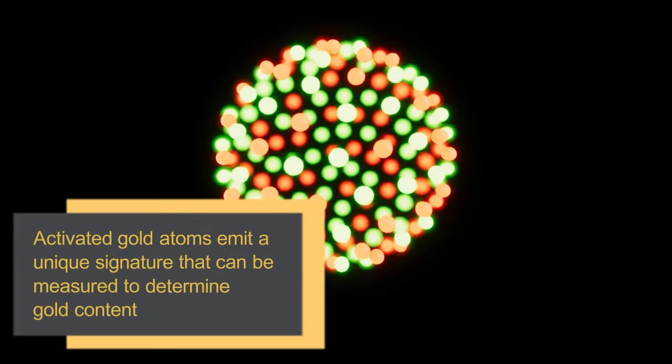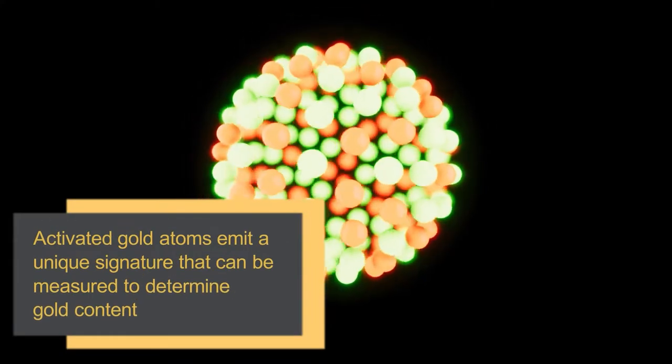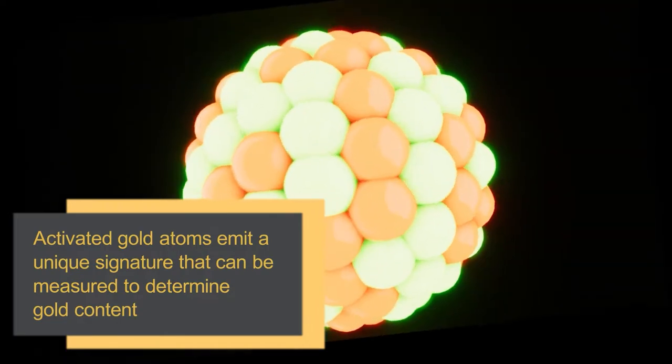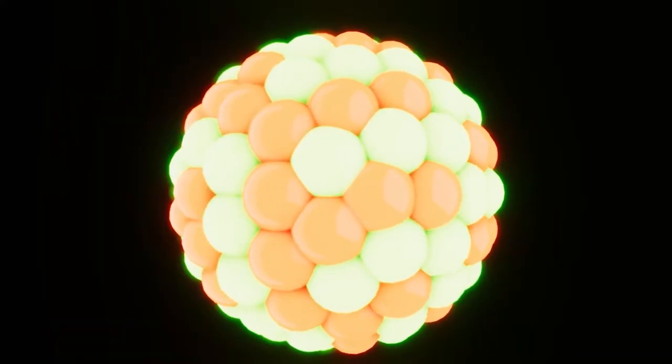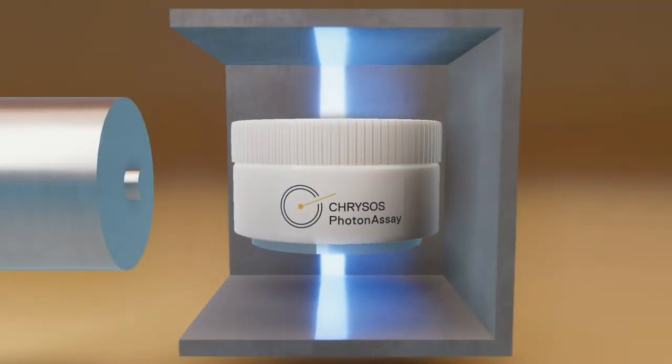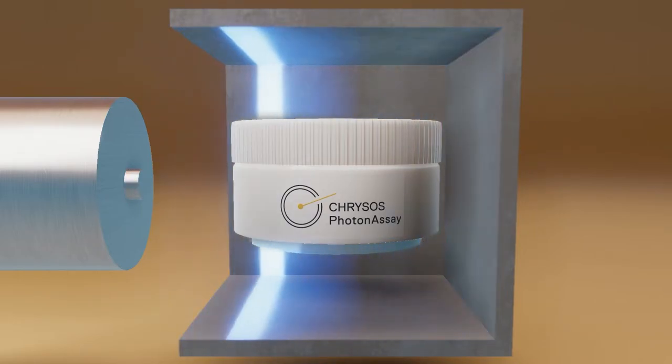The activated atoms emit a unique signature that can be measured to determine gold content. Both the source X-rays and signature gamma rays are extremely penetrating, meaning that a true bulk analysis of large samples, including crushed or pulverised rock, mineral process pulps, slurries and solutions, is quickly and easily achieved.